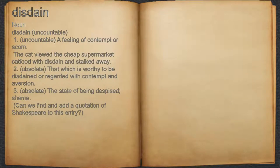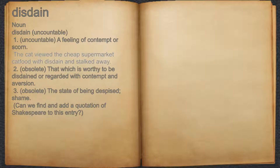Disdain. Noun. 1. Uncountable — a feeling of contempt or scorn. For example: the cat viewed a cheap supermarket cat food with disdain and stalked away.